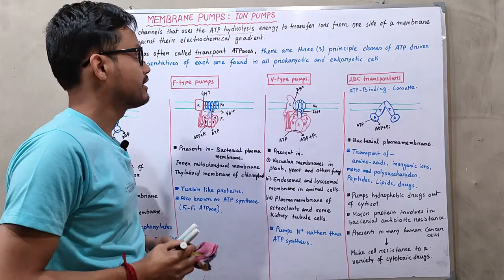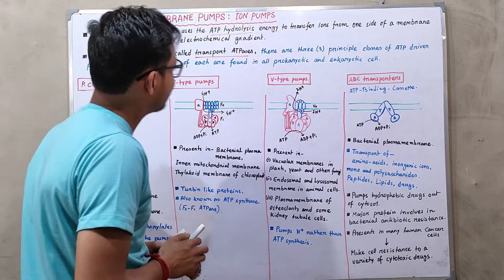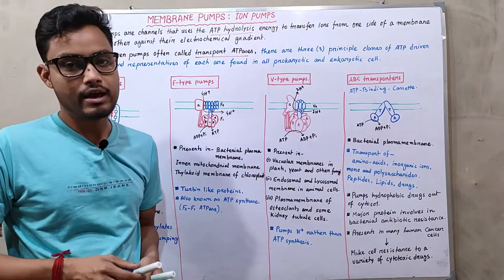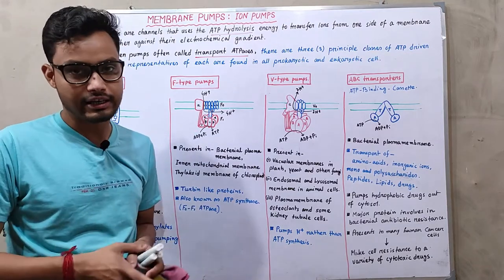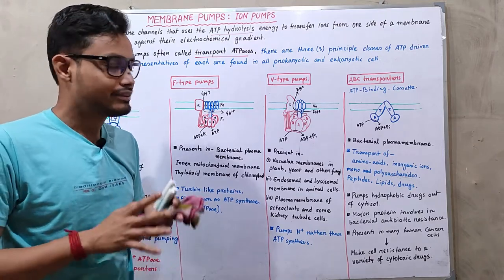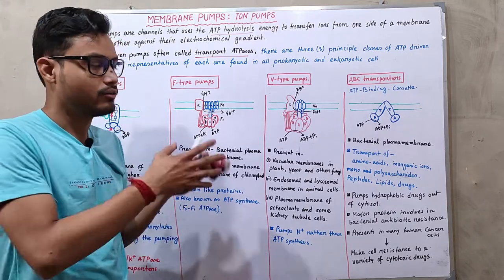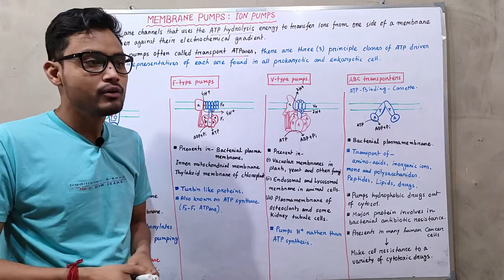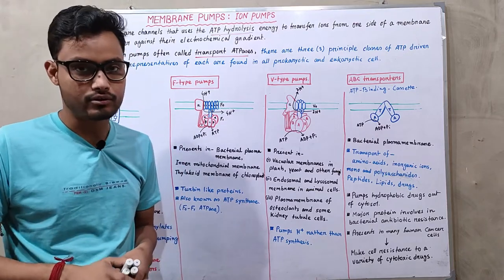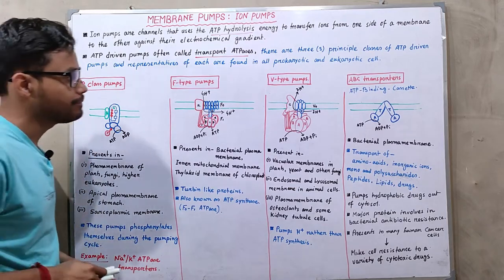There are three principal classes of ATP-driven pumps, and representatives of each are found in all prokaryotic and eukaryotic cells. They are divided into three major categories, with one additional category also present. These pump types are: P-class pumps, F-type pumps, V-type pumps, and ABC transporters.